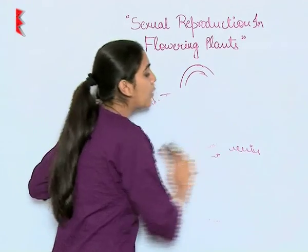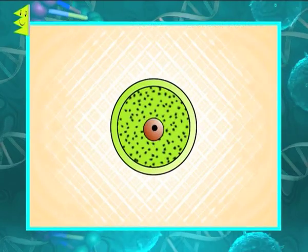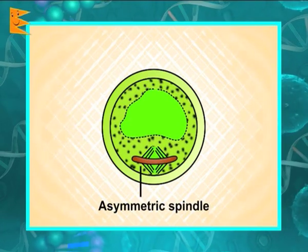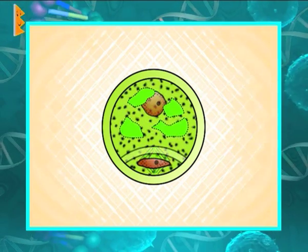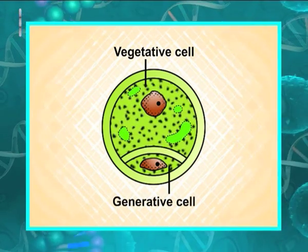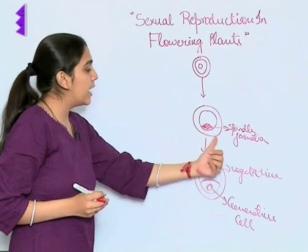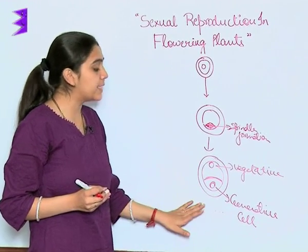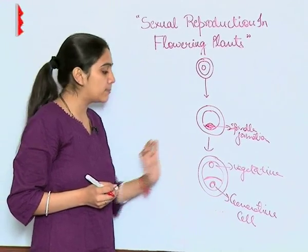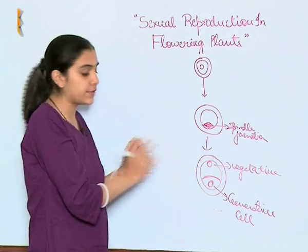Now let us see how a pollen grain matures and gets distributed. A pollen grain undergoes irregular spindle formation at its lower end, then divides into two parts: one is the vegetative cell and the other is the generative cell. In the majority of plants, pollen grains are shed at this two-cell stage, where one vegetative and one generative cell are present.